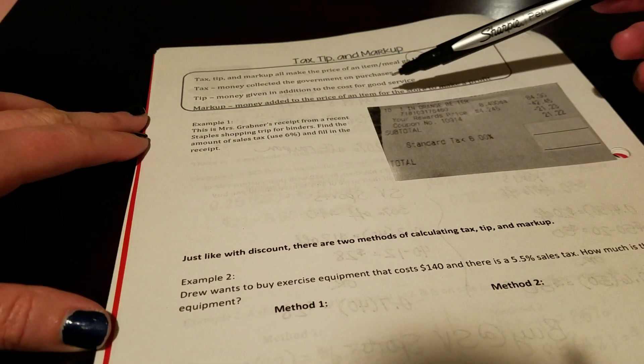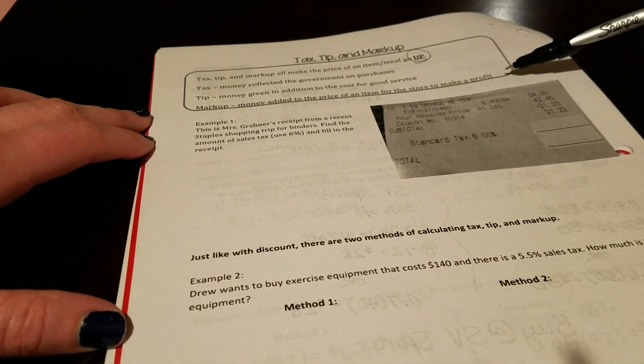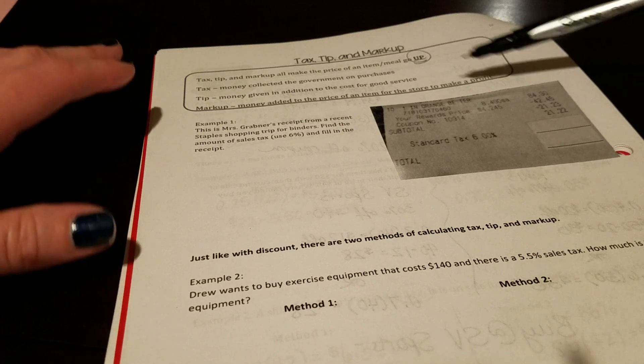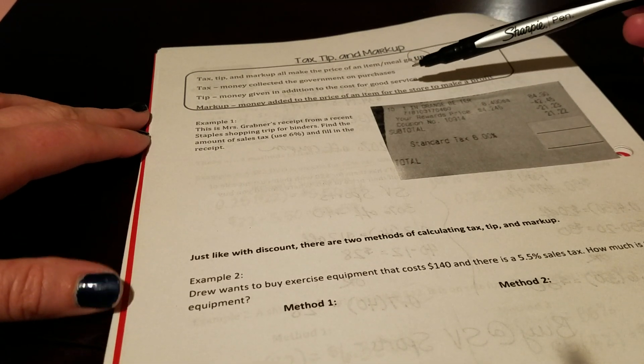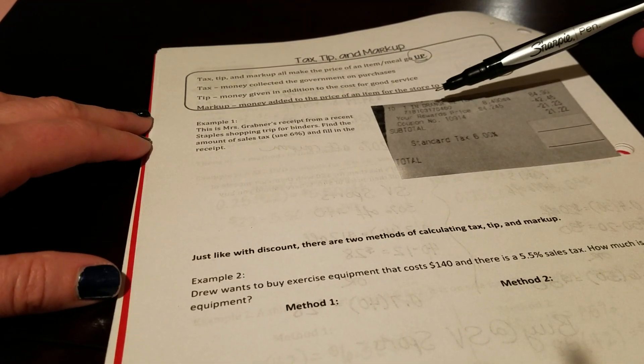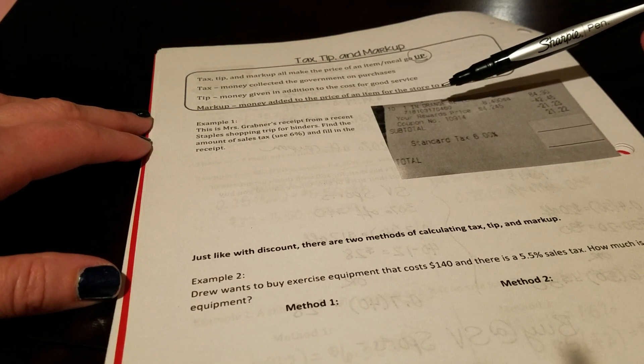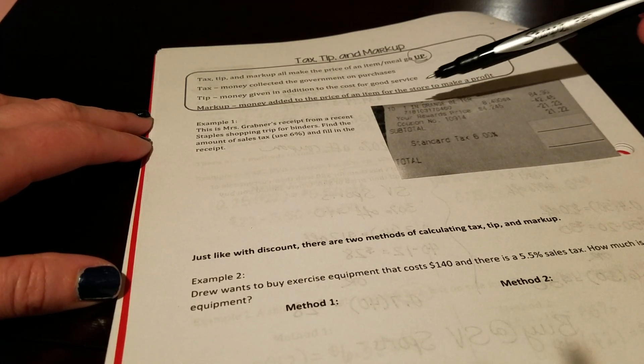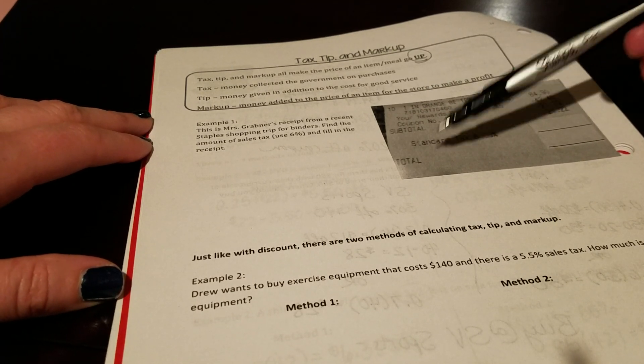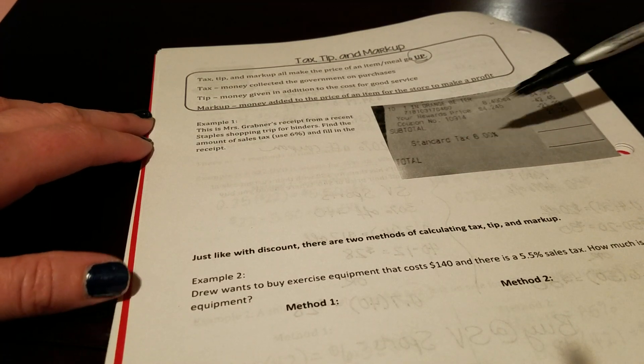Markup then is the money that's added to the price of an item for the store to be able to make a profit. For example, when Walmart or Target actually gets an iPad and they go to sell it, they increase the price so that Target itself can make some money off the sale of that product.